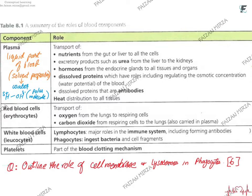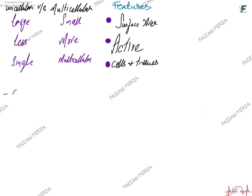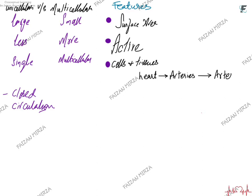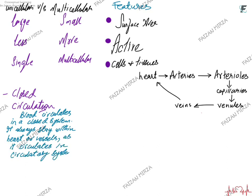Dissolved proteins such as antibodies are glycoproteins that travel in plasma only. Closed circulation means that blood stays within the circulatory system — from the heart to arteries, arterioles, capillaries, venules, veins, and back to the heart. Blood always stays within the heart or vessels as it circulates. The circulatory system comprises pulmonary circulation and systemic circulation.